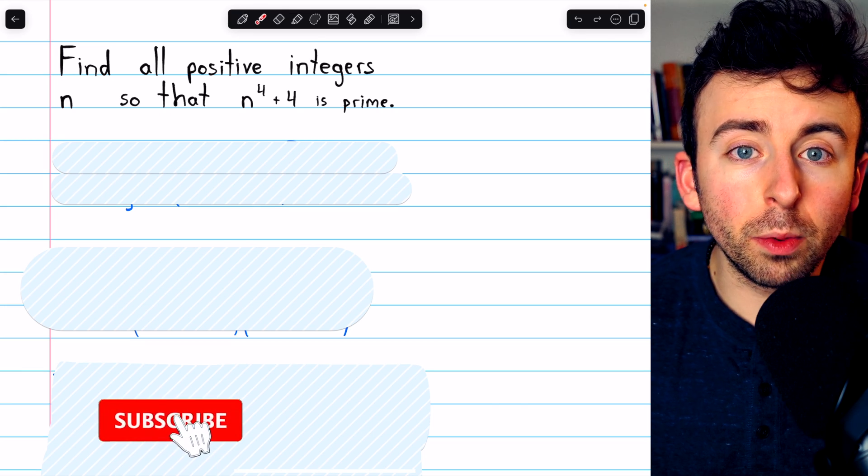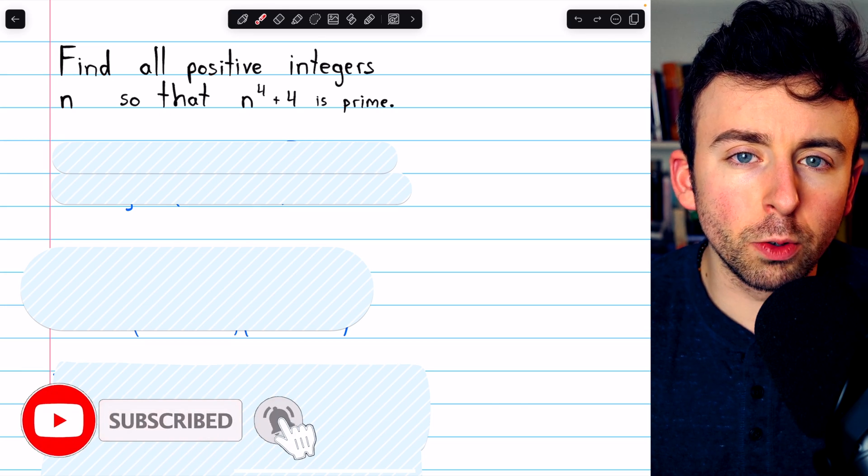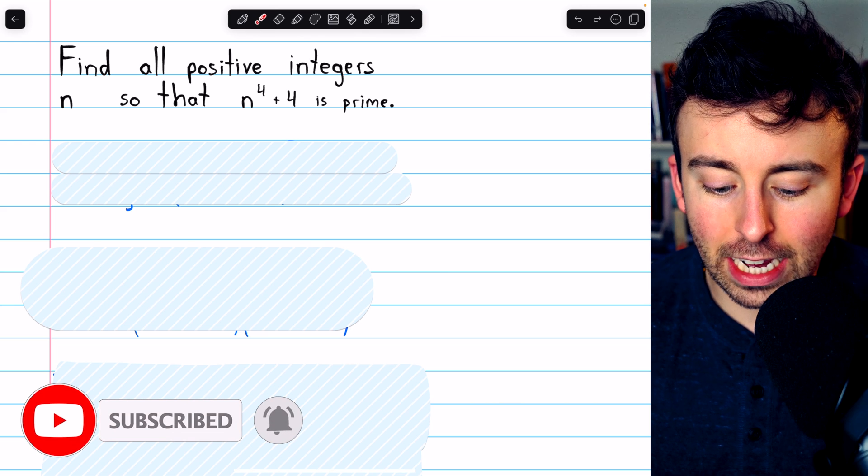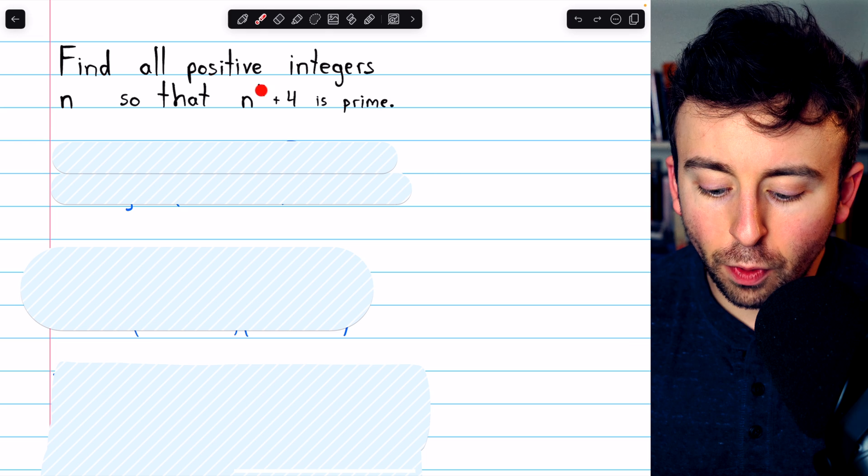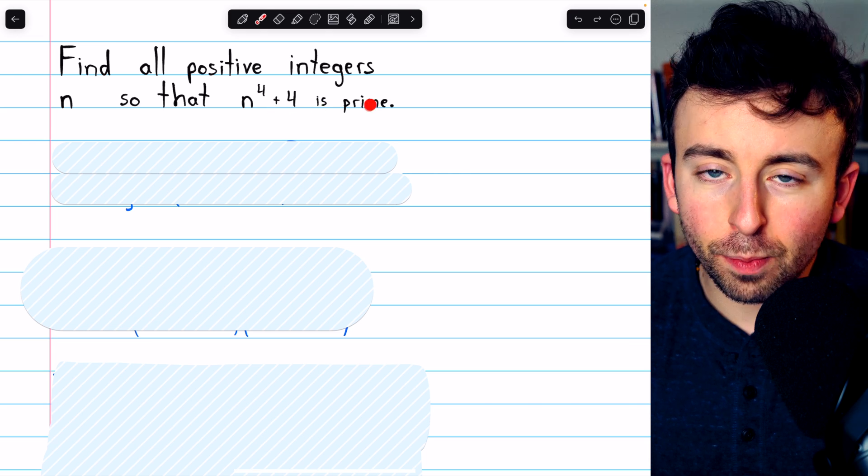Here's a nice number theory problem that will give us a great opportunity to introduce a useful little identity. We want to find all positive integers n so that n to the 4 plus 4 is prime.